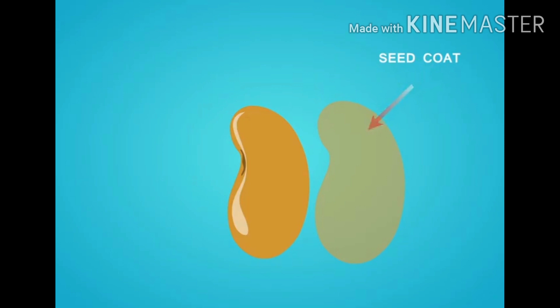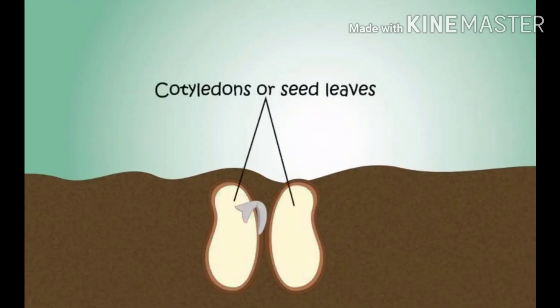Second, seed leaves. Inside the seed there are two cotyledons, or seed leaves, that store food for the baby plant or embryo growing inside.